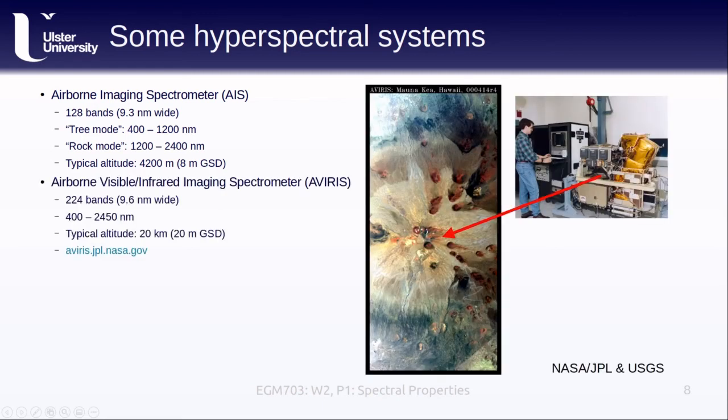Next up, we have the Airborne Visible and Infrared Imaging Spectrometer, or AVIRIS. You can see what this sensor looks like in the photo provided by NASA's Jet Propulsion Laboratory here. An example of one of the images taken by AVIRIS over Mauna Kea, Hawaii here. AVIRIS has 224 bands with a bandwidth of 9.6 nanometers, recording between 400 and 2450 nanometers. At a typical flying altitude of 20 kilometers, AVIRIS has a normal ground sampling distance of 20 meters.